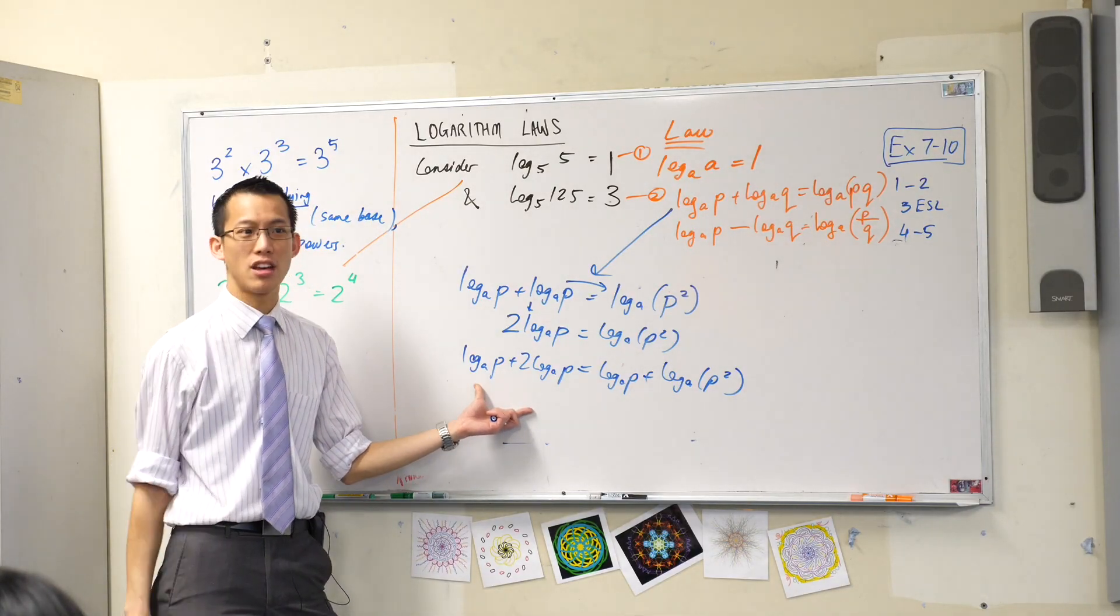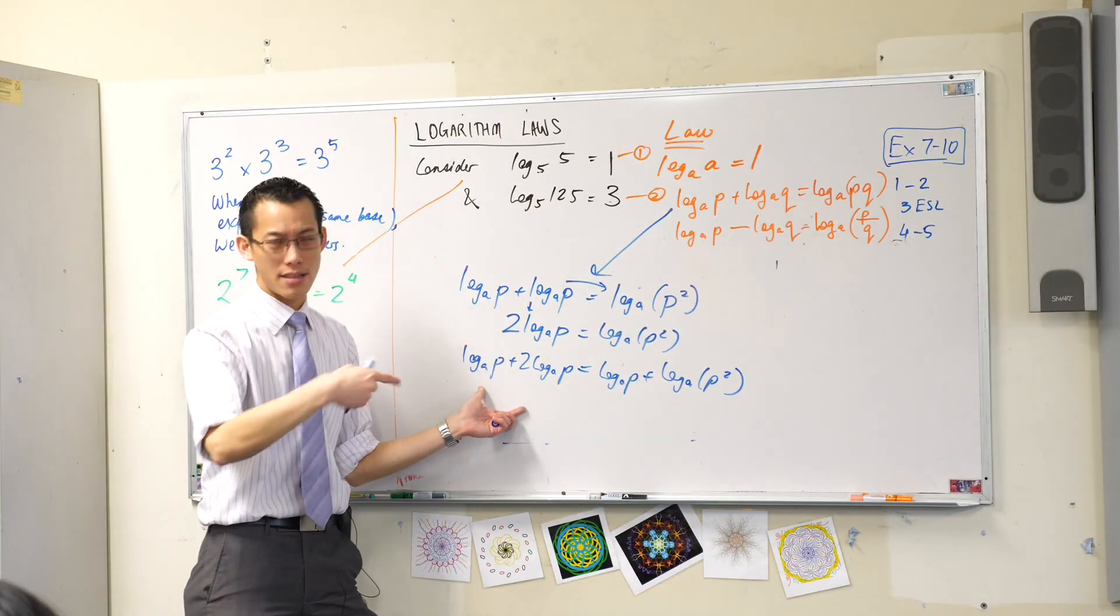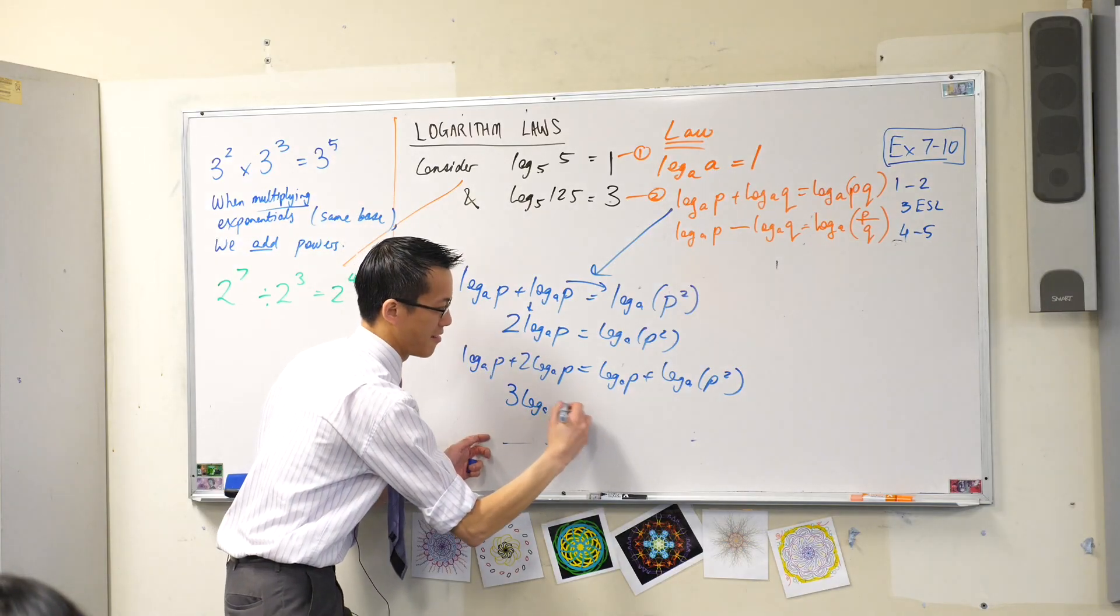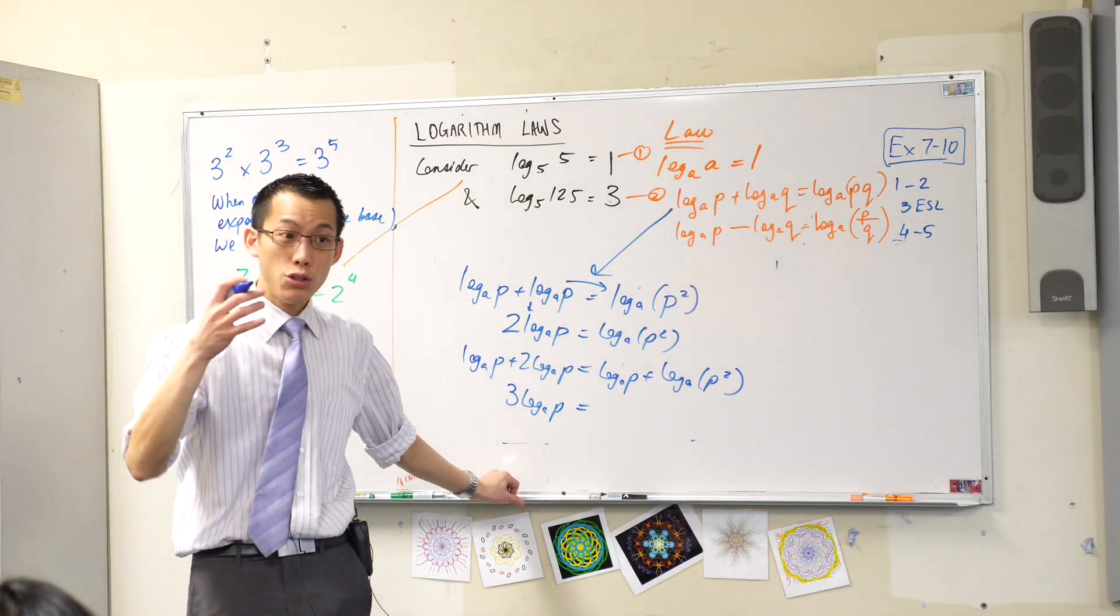Left hand side, can you collect some like terms for me? How many log base A of P's do I have? There are three of them. What about the right hand side? Don't collect like terms because they're not like. Use your log laws.